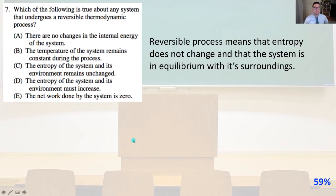Number 7. Which of the following is true about any system that undergoes a reversible thermodynamic process? Well, a reversible process means that entropy does not change and that the system is in equilibrium with its surroundings. So that's going to be answer C.